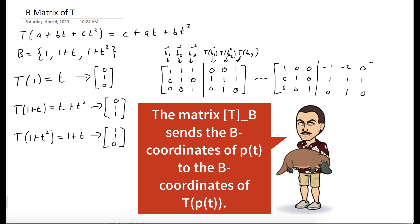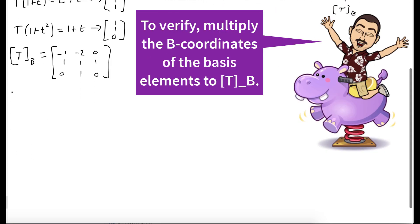So here is the B-matrix for T. And the way we can verify our answer is we're going to multiply the B-coordinates of each of our basis elements by this matrix T, and we should get the image that we had originally.